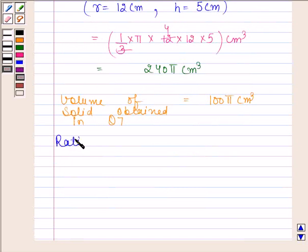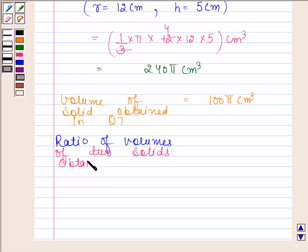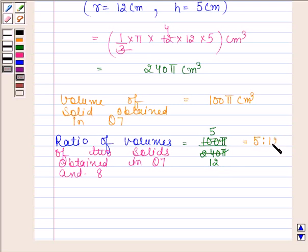So ratio of the volumes of two solids obtained in question 7 and 8 is 100π upon 240π. π and π cancels out. On cancelling 100 by 240, we get 5/12. So ratio of volume of two solids obtained in question 7 and question 8 is 5 is to 12.